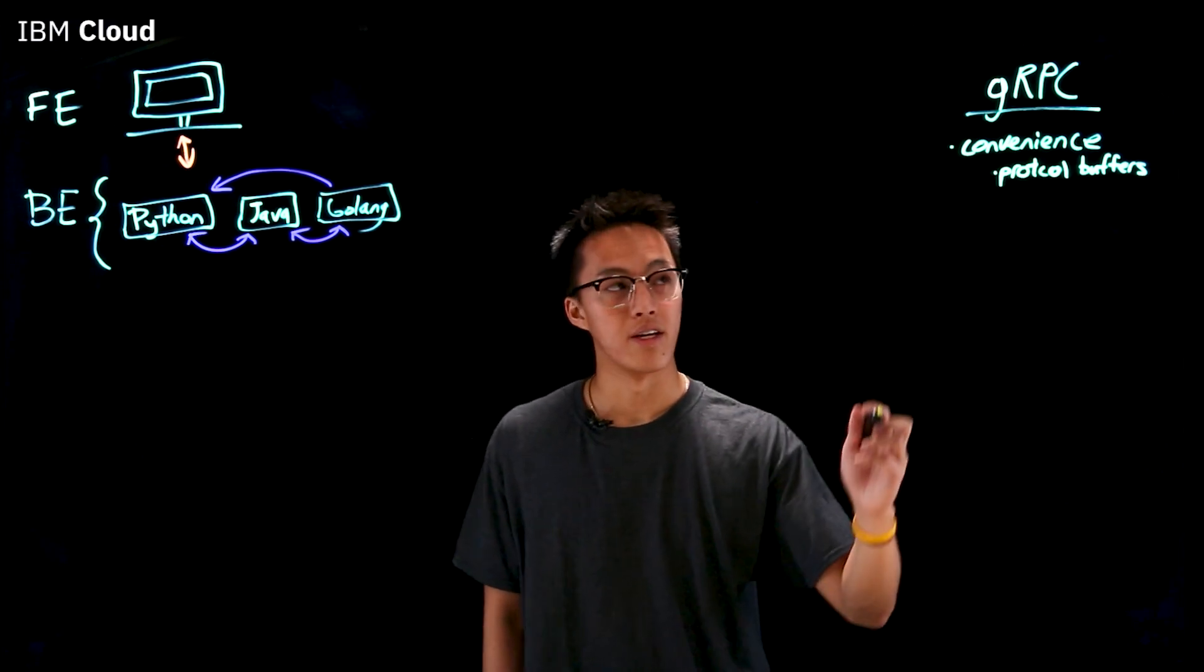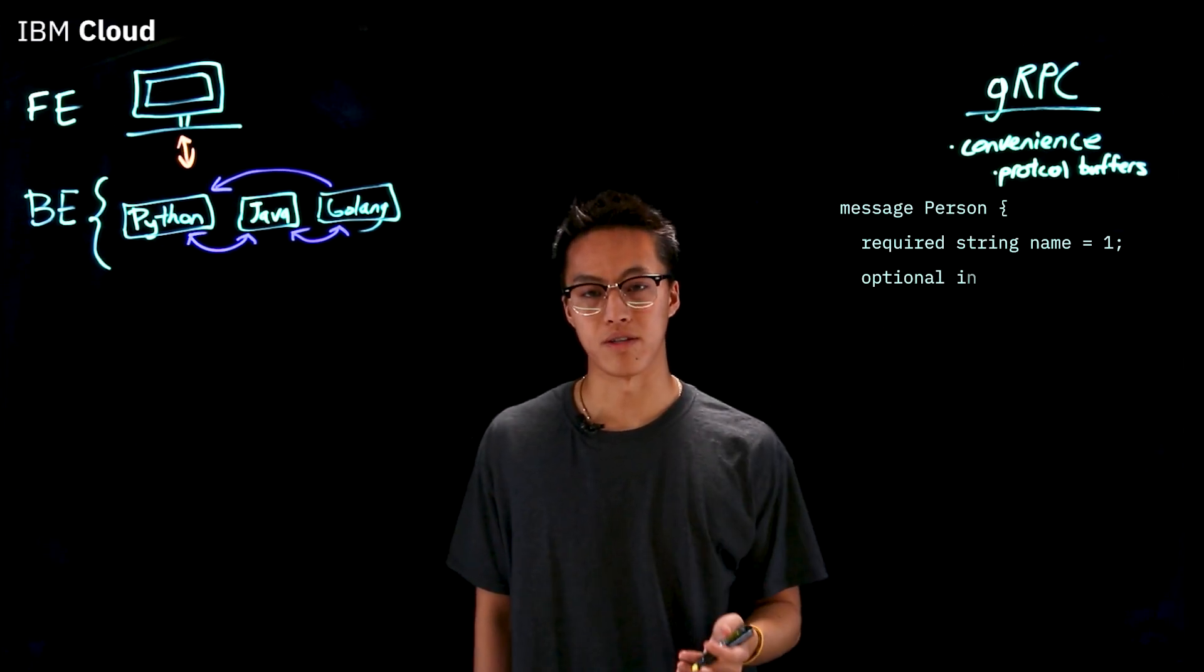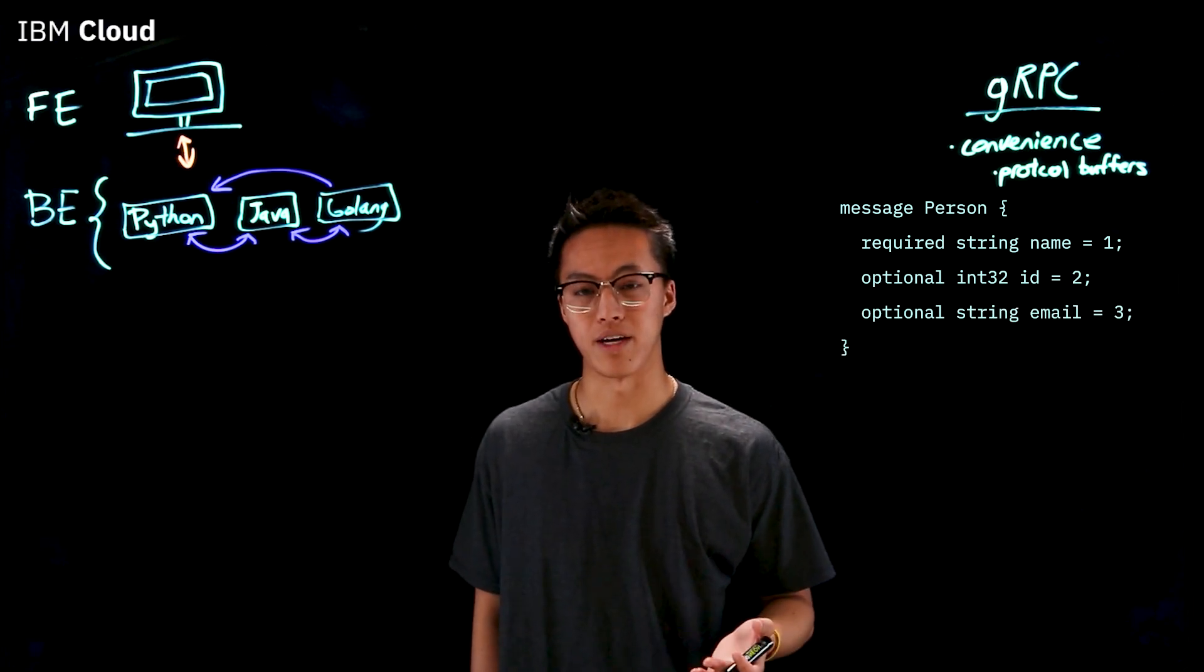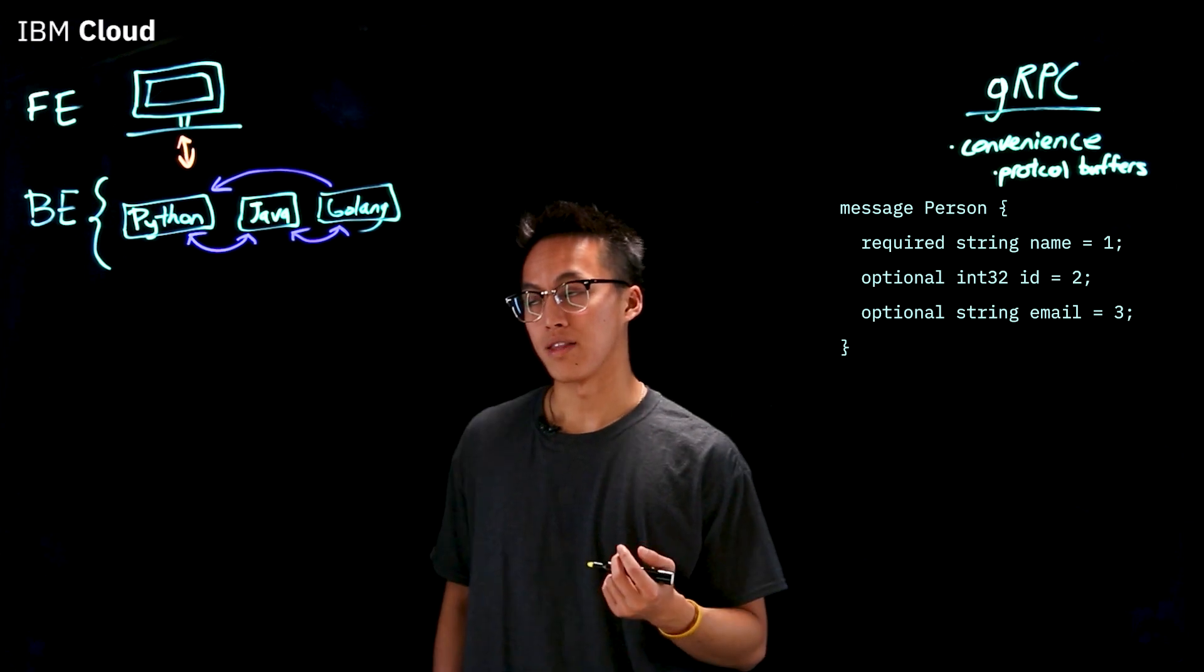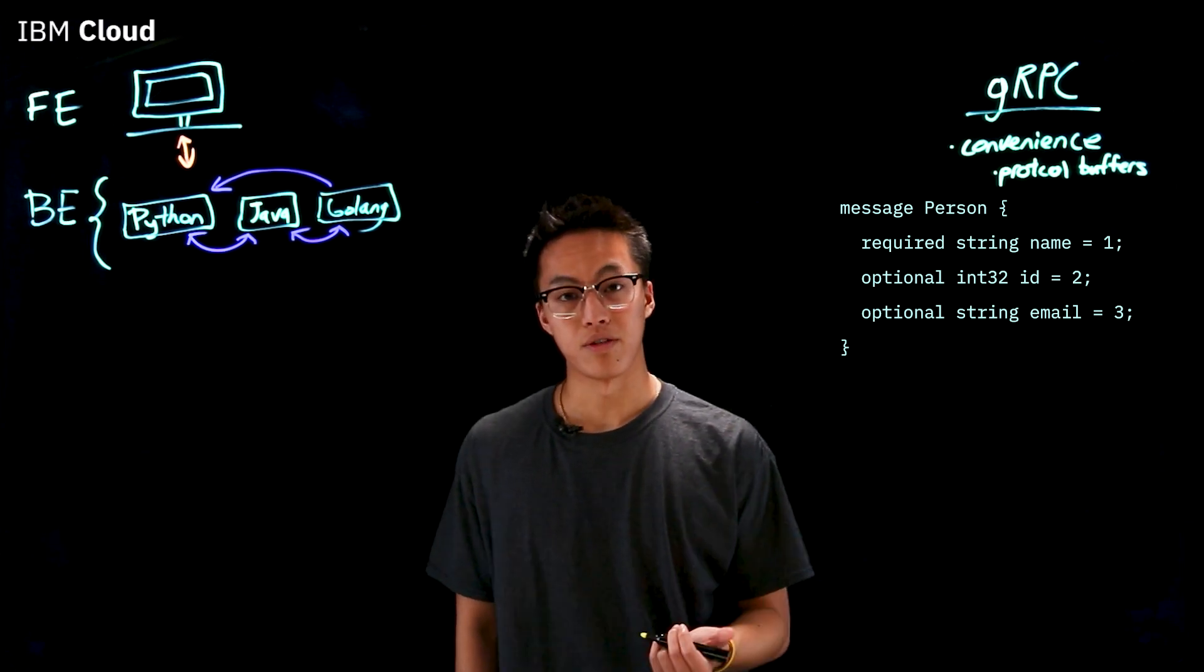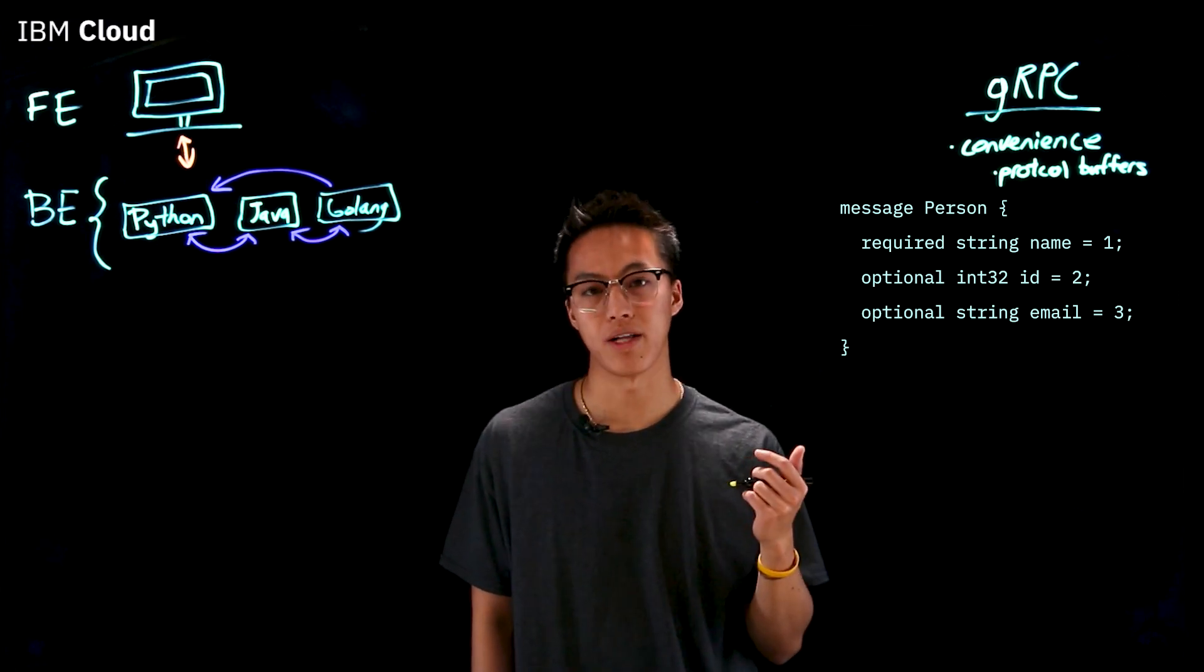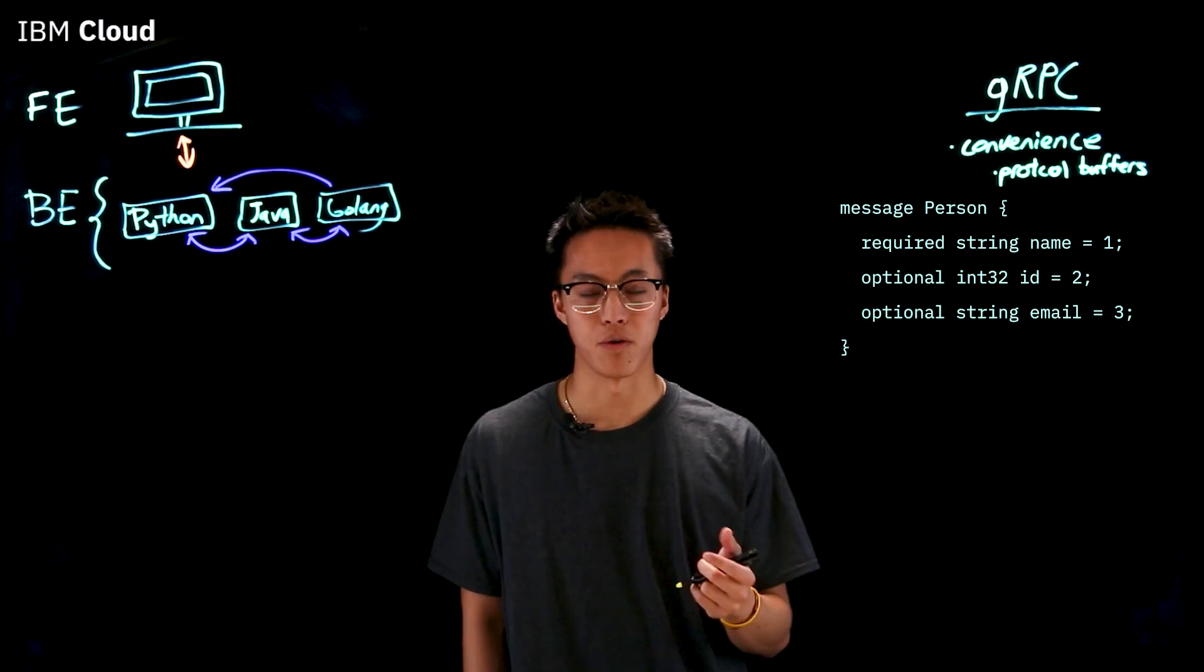But with these protocol buffers in the proto file, which is where you define what is essentially a schema for the data that's being sent, you can define things like the fields that you expect, which fields are required, which fields are optional, as well as the object types for these fields.